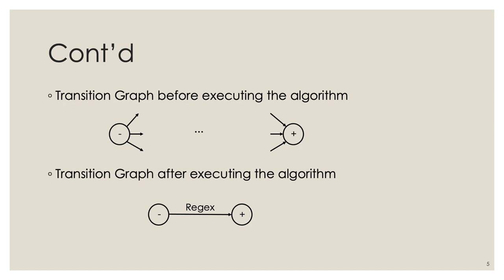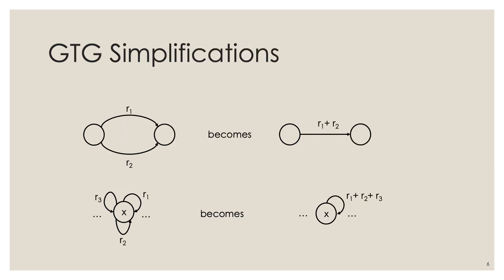As a holistic view: before executing the algorithm, we have a transition graph with an initial state, a final state, and intermediate states. After executing the algorithm, we end up with just one unique initial state related to one unique final state by a single regular expression. Since transition graph edges are labeled with substrings, we work with a generalized transition graph where edge labels are regular expressions.